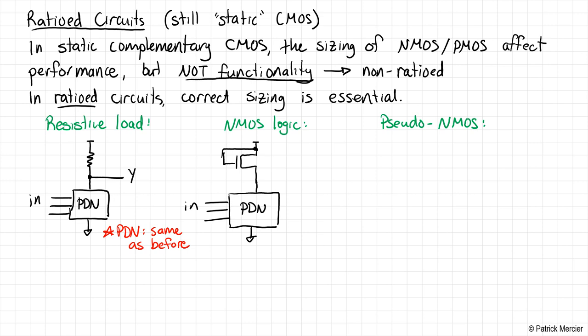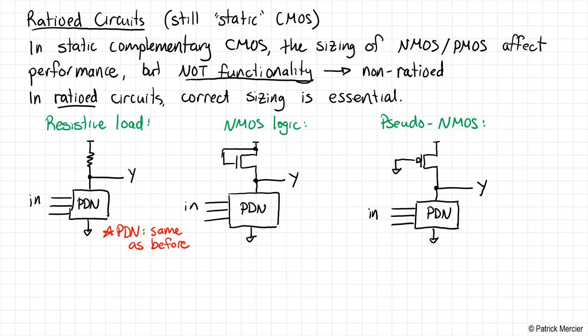There's another class called pseudo-NMOS circuits. NMOS logic was used when building ICs without access to PMOS transistors — an NMOS-only logic family. With CMOS, we don't have to put an NMOS transistor up there. We can instead use a PMOS, which we call pseudo-NMOS, because we're not using the PMOS for a logic computation function — we're just using it as a load to our circuit.